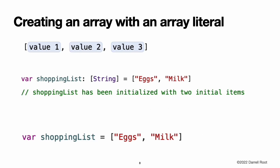Thanks to Swift's type inference, you don't have to write the type of the array if you are initializing it with an array literal containing values of the same type. The initialization of shoppingList could have been written in a shorter form, because all values in the array literal are of the same type. Swift can infer that Array of String is the correct type to use for the shoppingList variable.